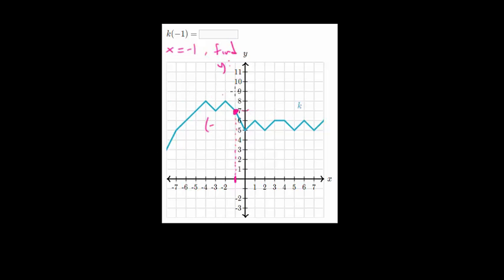And we just need its y value, which looks to be 7. So this curve k, this function goes through the point (−1, 7). So when x is minus 1, the y value here would be positive 7.